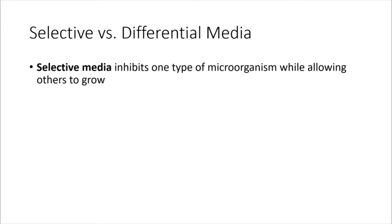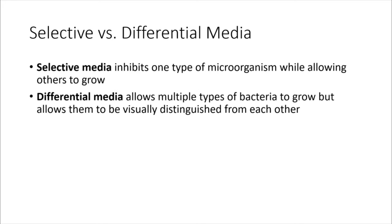Selective media inhibits one type of microorganism while allowing others to grow, and in this way selective media can serve the purpose of allowing you to isolate and identify a specific type of bacterium. Differential media, on the other hand, allows multiple types of microbes to grow, but there's some ingredient in the differential media that allows them to be visually distinguished from each other, for example by a color change.